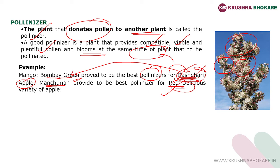I think you now understand the concept of pollinator and pollinizer. UPSC asks this question because conservation of biodiversity is a very important issue. Both pollinizer and pollinator are equally important for biodiversity conservation. Not conserving pollinizers may negatively affect our commercial varieties, and not conserving pollinators may lead to less pollination and lower yield, cumulatively affecting the overall yield of our field crops and fruit crops.